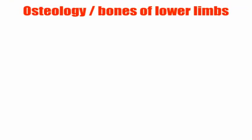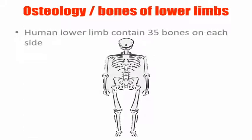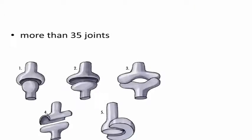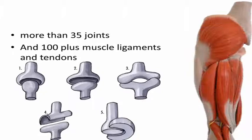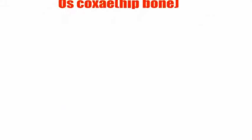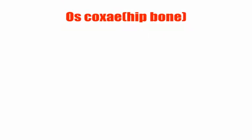First we will start by learning about the bones of the lower limb. Basically, the human lower limb contains five bones on each side and more than 35 joints and over 100 muscles, ligaments, and tendons.